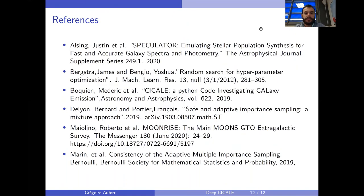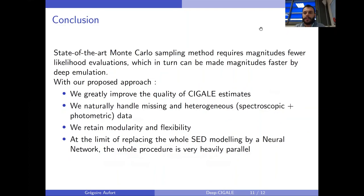I've put a few references with notably the figures that I used. I hope the Deep CIGALE current version will be available soon, as well as the paper about tempered adaptive multiple importance sampling. Thank you for your attention.